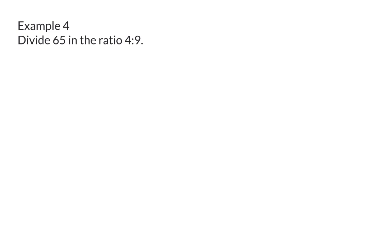Example 4. Divide 65 in the ratio 4 to 9. In example 3 we received the ratio as well as one of the actual values for a side in the ratio. This time we once again received the ratio but we also receive the total value for both sides of the ratio.